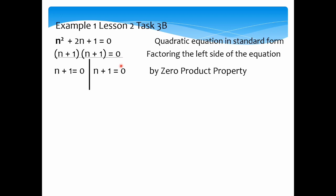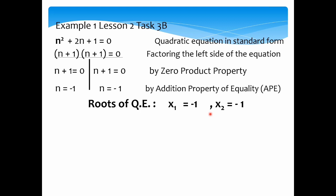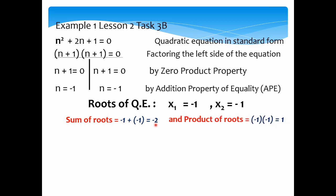Using the zero-product property, we equate each factor to 0. So we have n plus 1 equals 0 and n plus 1 equals 0. Using the addition property of equality, we arrive at n equals negative 1 and n equals negative 1. So we have equal roots, both negative 1. The sum of roots is negative 1 plus negative 1, which equals negative 2. The product of roots is negative 1 times negative 1, which equals 1.